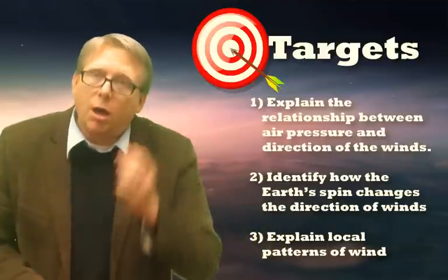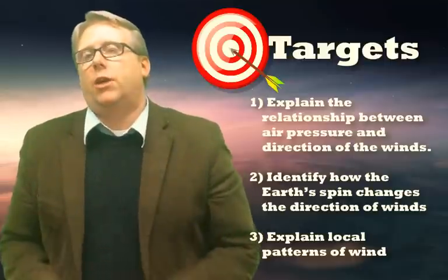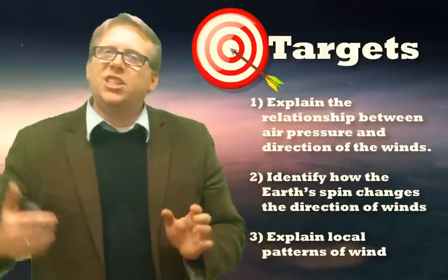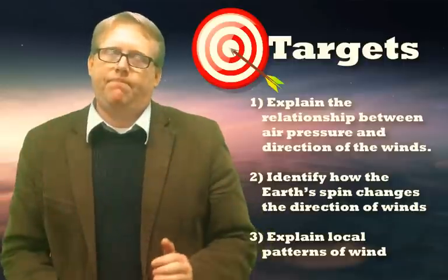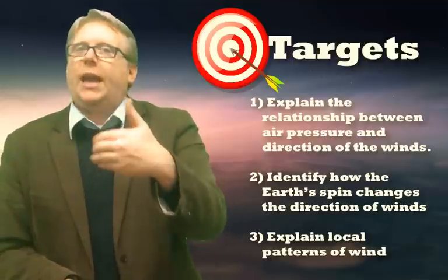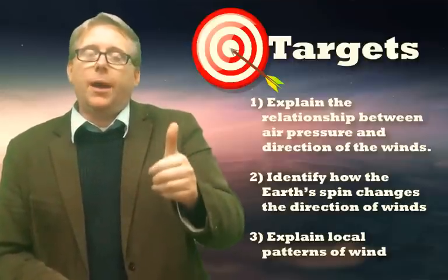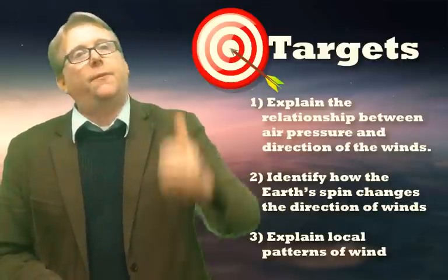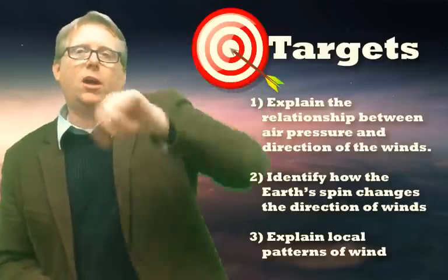We also saw that the Earth's spin changes the direction of the wind. So as that wind is blowing from the high pressure to low pressure, the spin is turning it. If you're up here in North America, we use the right-hand rule. And if the air is moving up at a low pressure, it'll spin it to the counter clockwise. And if it's on a high pressure, it'll spin it clockwise.